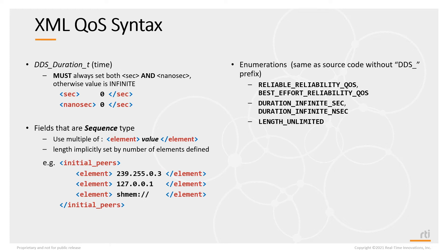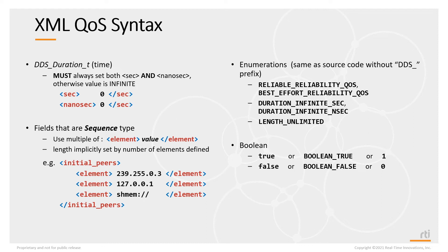For enumerations in code, they are usually prefixed with a DDS underscore. In XML, you can drop that DDS underscore. For Boolean values, you can use true or false, or boolean_true or boolean_false, or 1 or 0.